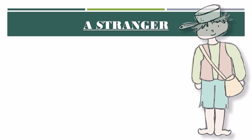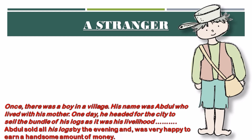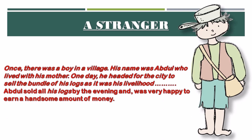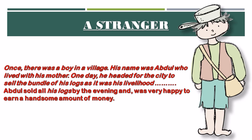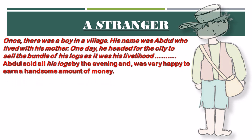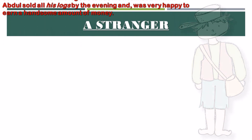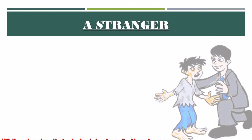Now let's write the story. 'Once there was a boy in a village. His name was Abdul who lived with his mother. One day, he headed for the city to sell the bundle of his logs as it was his livelihood.' This was the beginning given in the question, and in it, the revealing of time, place, and the character Abdul is already done — so you don't need to worry about exposition. Continuing: 'Abdul sold all his logs by the evening and was very happy to earn a handsome amount of money.' With this, little action took place in the life of the character — the second stage of story development.